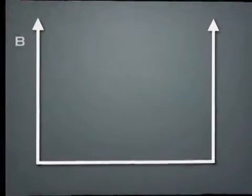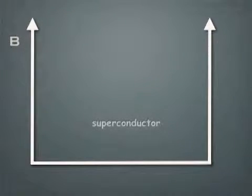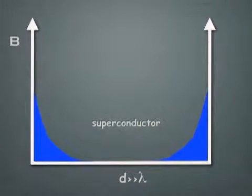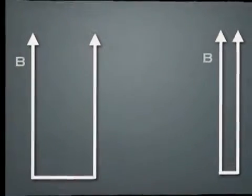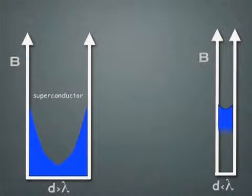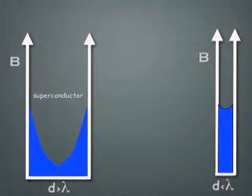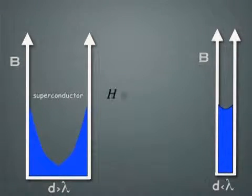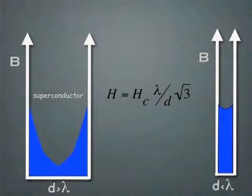But if the dimensions of the superconductor become small, and particularly small compared to the penetration depth, then of course much less of the field is excluded, and therefore the superconductivity can persist to higher fields. For instance, for a thin film of the superconductor of thickness d, we can write the field is equal to Hc times lambda over d, and there is a factor of root 3 in there.